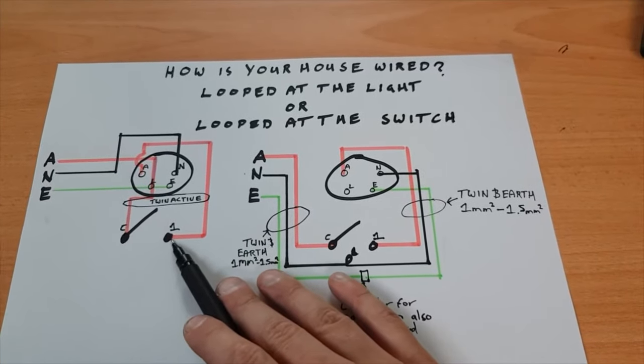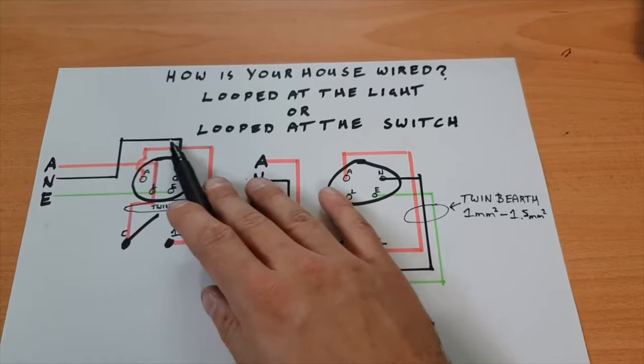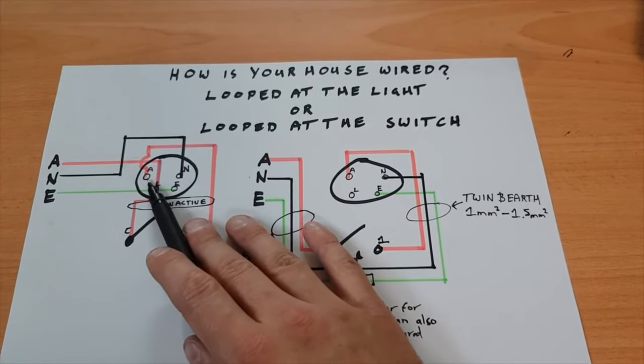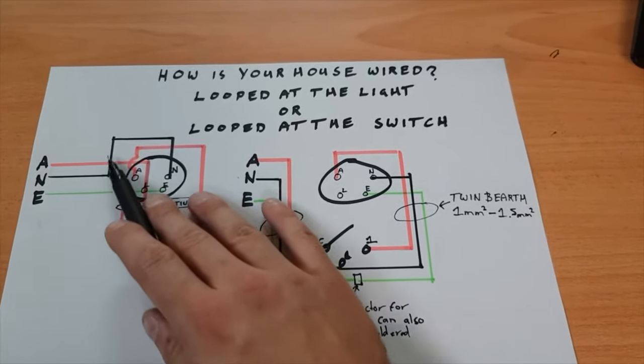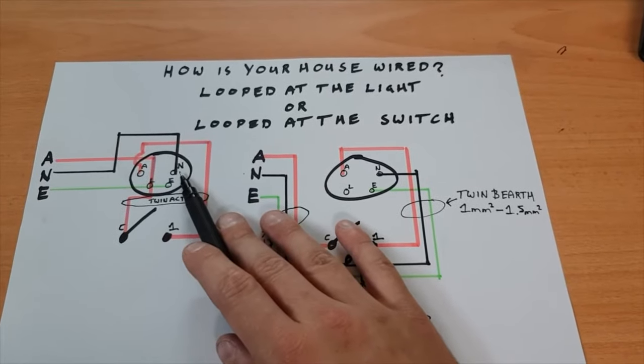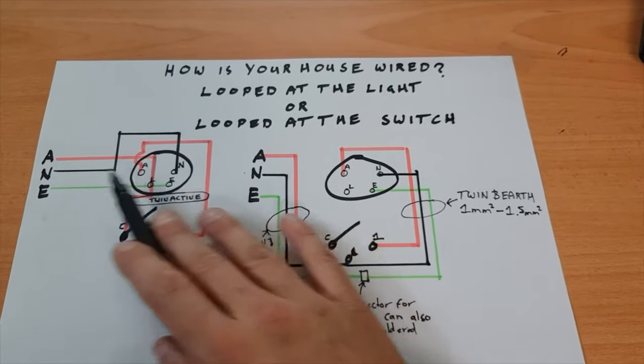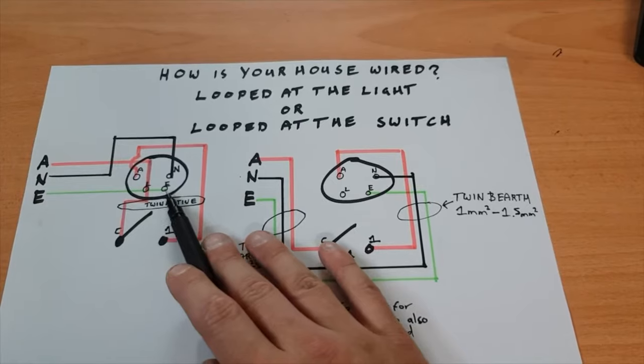Once that is flicked, this bar here, once that flicks down, the power will flow through the switch back up to the light active. Then basically your neutral just goes straight to your neutral terminal of your light, and then your earth goes straight to the earth terminal of the light.